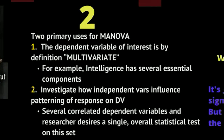There are two primary uses for a MANOVA. First, the dependent variable of interest might by definition be multivariate — success in a company can be measured in a multivariate way, and intelligence has several essential components you might want to measure each separately. Second, you can investigate how the independent variables influence patterning of responses on the dependent variables. A MANOVA allows you to look at correlated dependent variables and get a single overall statistical test for the set.